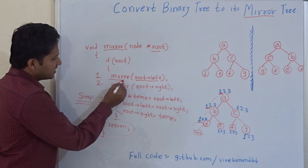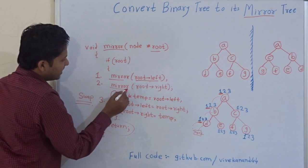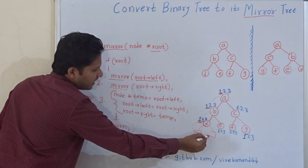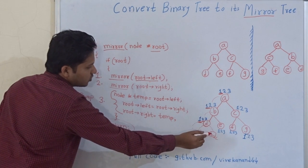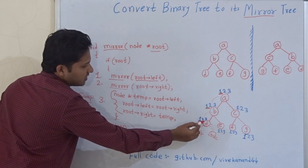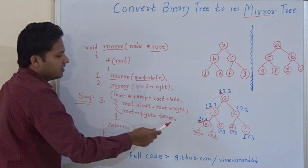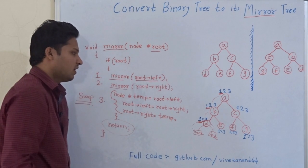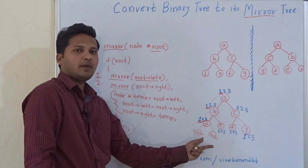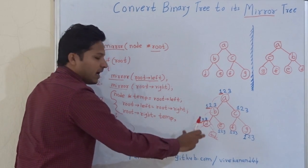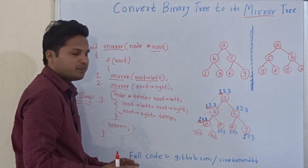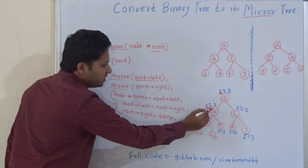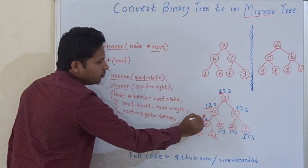We returned to node D from the null. Now we execute the second step — go to the right child — which is also null, so we return again. Now the third step at D: swap left and right child. Both are null, so null is swapped with null — not a significant step, but it completes. After that we return to B.